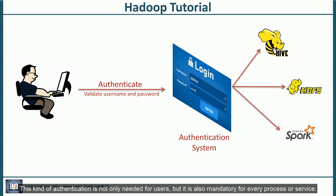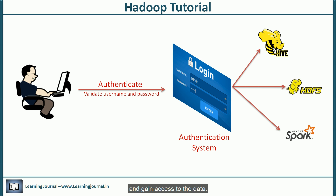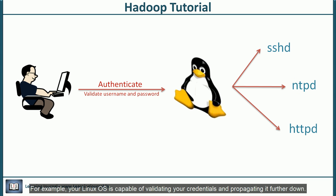This kind of authentication is not only needed for users, but it is also mandatory for every process or service. In the absence of authentication, a process or a user can pose itself to be a trusted identity and gain access to the data. Most systems implement this capability — for example, your Linux operating system is capable of validating your credentials and propagating them further down.